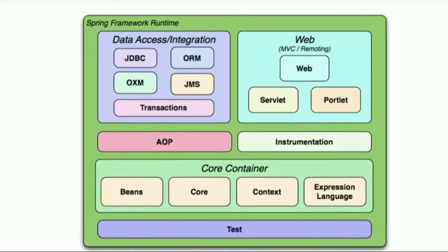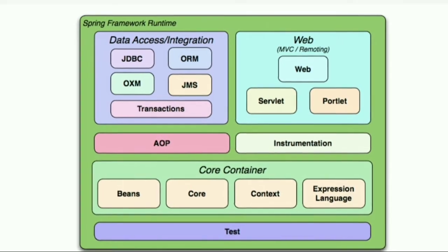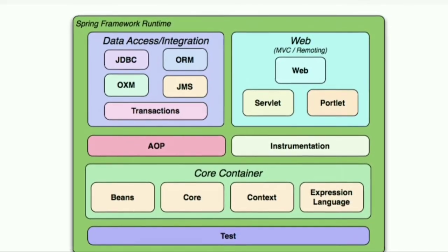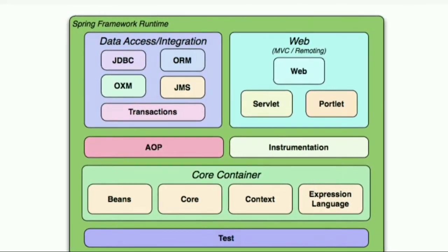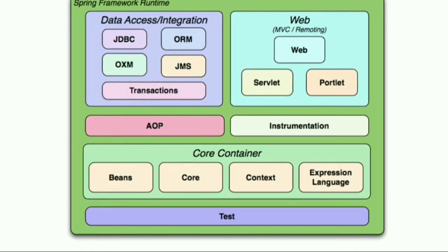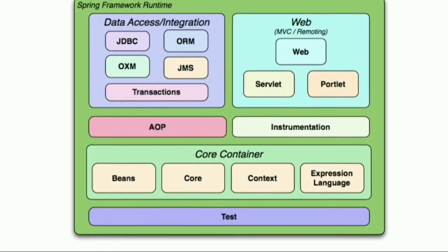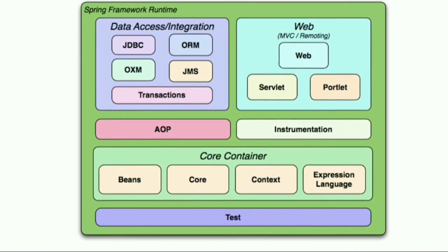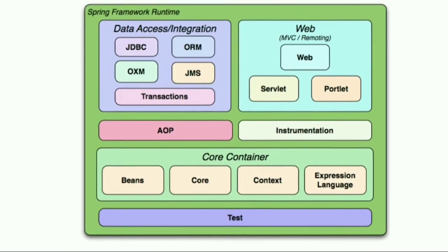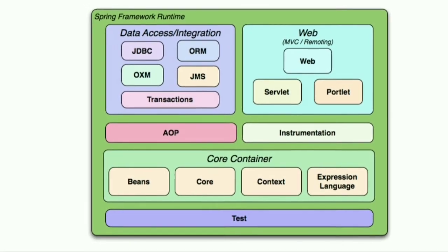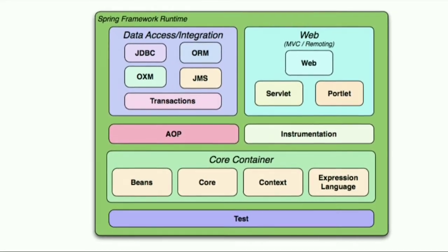The next module is OXM — Object XML Mapping. The main concept is converting a Java object to XML. It handles marshalling and unmarshalling of Java objects.